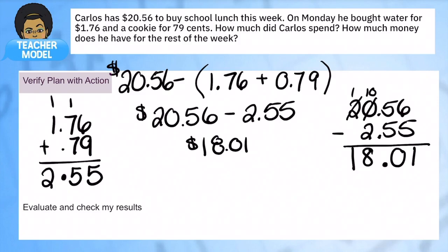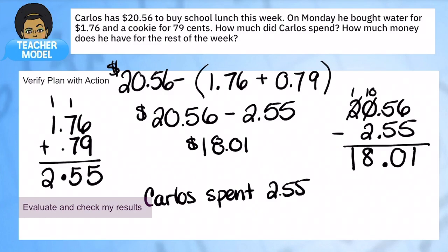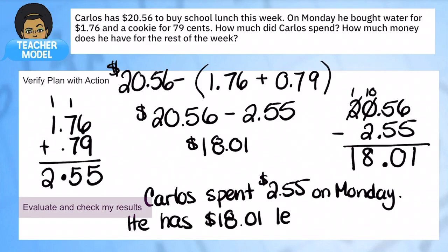So there you go. Let me make sure I also answer it in a full sentence: we know that Carlos spent $2.55 on Monday, and he has $18.01 left for the week. Done. I'm going to stop there. Normally I will go back and double-check my work, but we're going to hit pause so you can jot this down into your work and we can go into some more practice problems. So there you go—now we've just reviewed adding and subtracting with decimals using SOLVE.